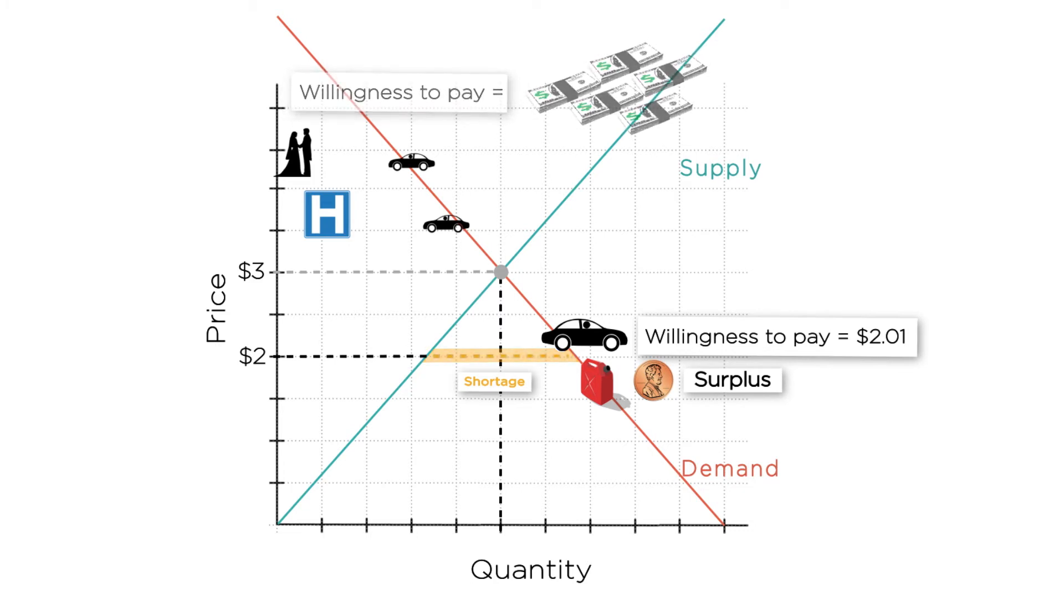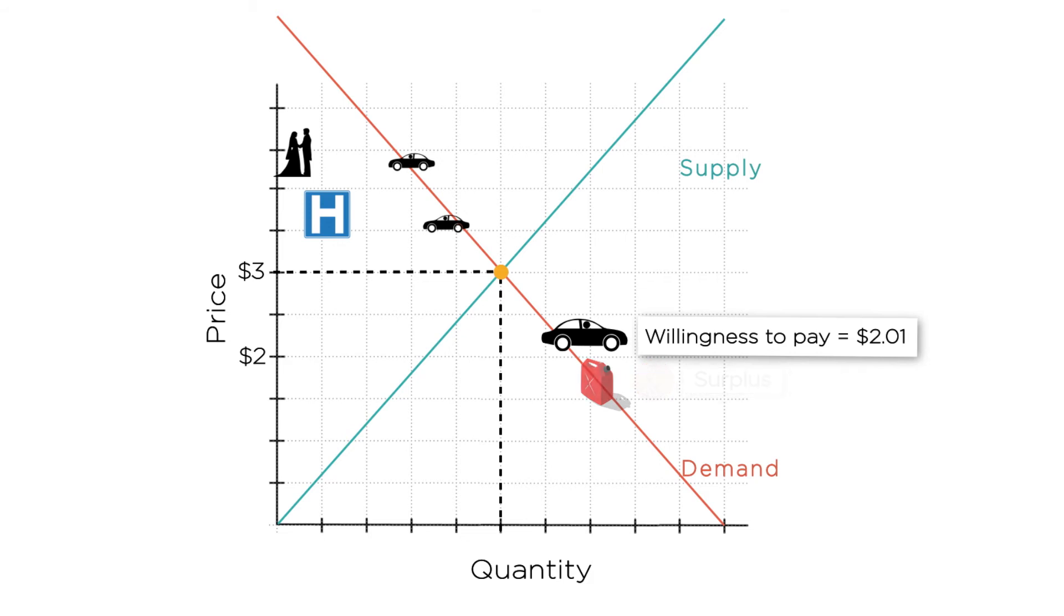Why is this not a problem in competitive equilibrium? In the competitive case, the price goes all the way up to equilibrium, past the artificial $2 ceiling. Therefore the guy who's only willing to pay $2.01 won't buy the gasoline. There's no longer a shortage, so the guy who's willing to pay thousands has no risk of missing out.